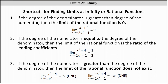Case one: if the degree of the denominator is greater than the degree of the numerator, then the limit of the rational function is zero. For example, if the degree of the denominator is three and is higher than the degree of the numerator, the limit as x approaches infinity equals zero, because the denominator is growing faster than the numerator.